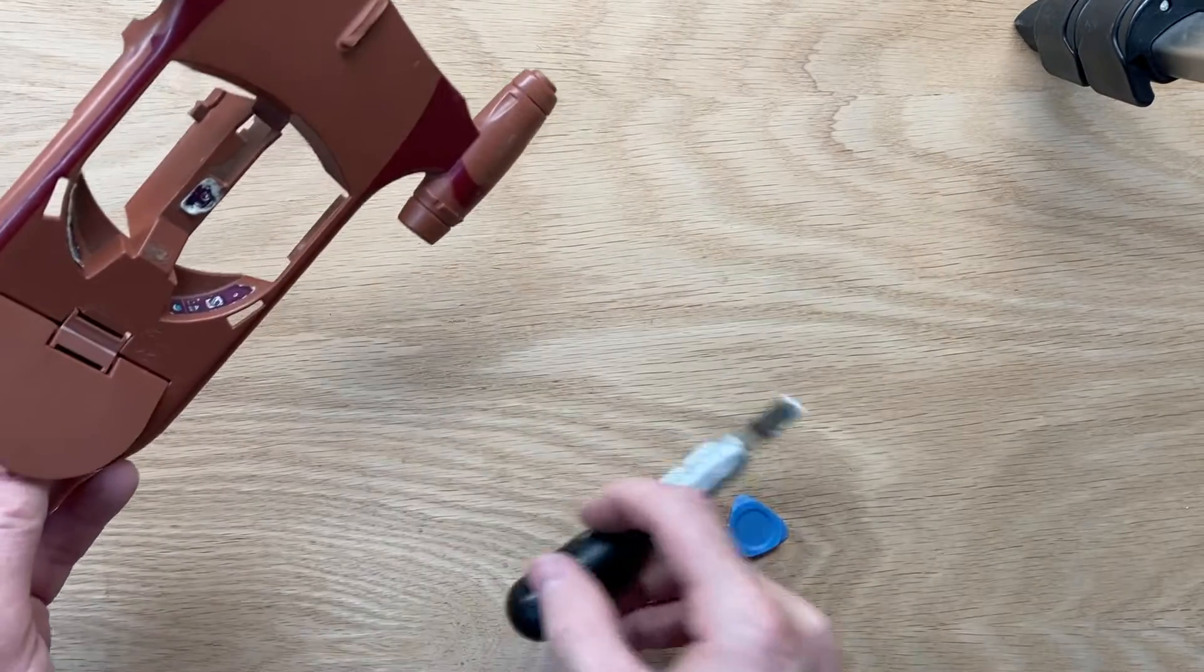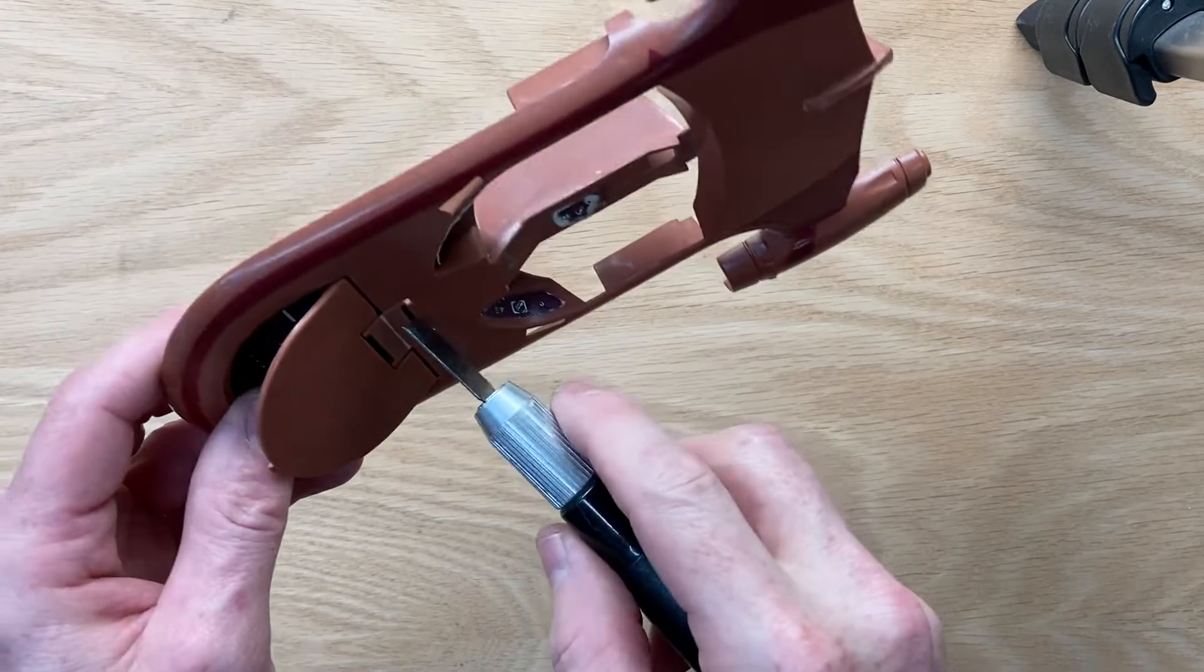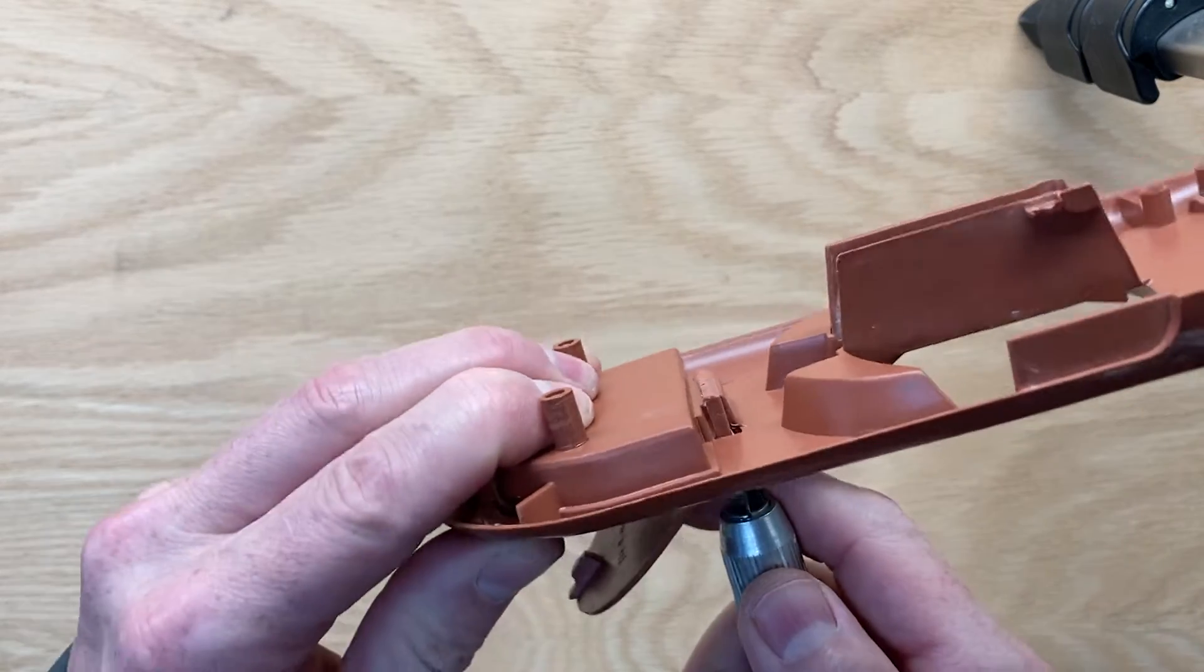So what I find works perfect is if you have an X-Acto knife. Sometimes they come with these flat chisel scraping blades and it's almost the exact size of the slot for the front of the hinge.